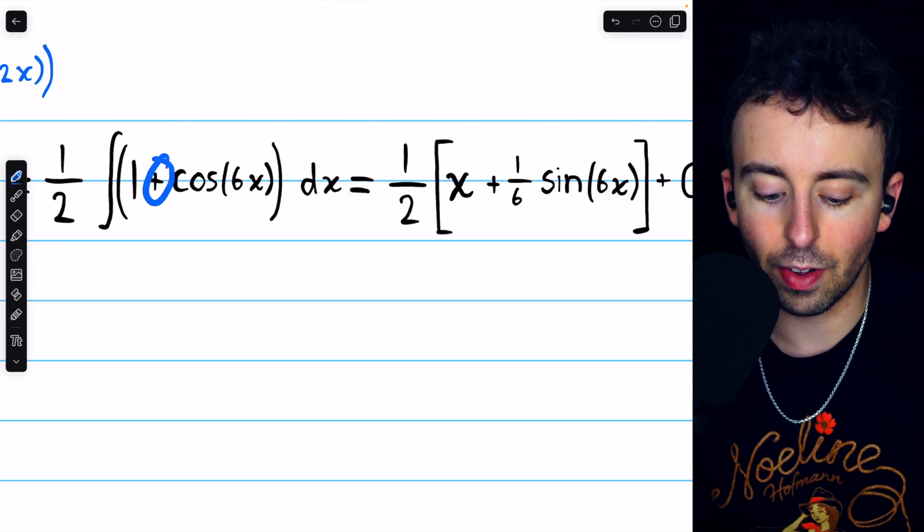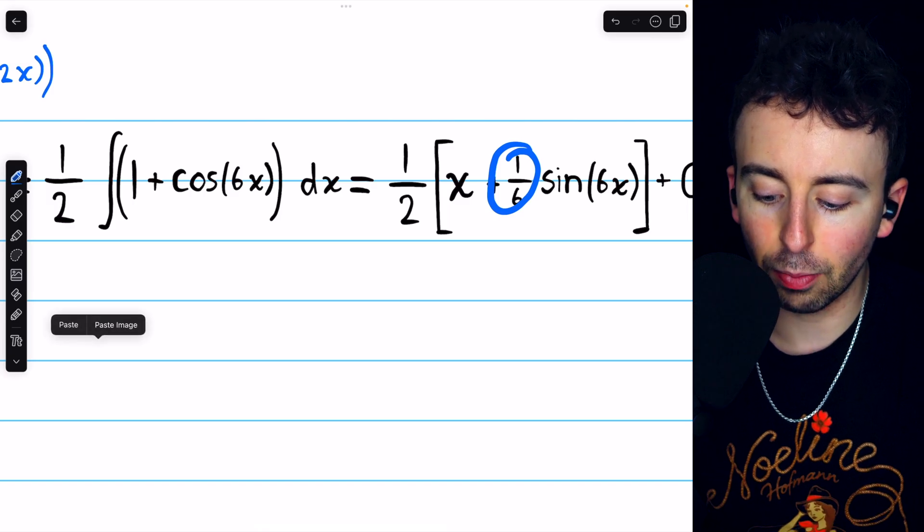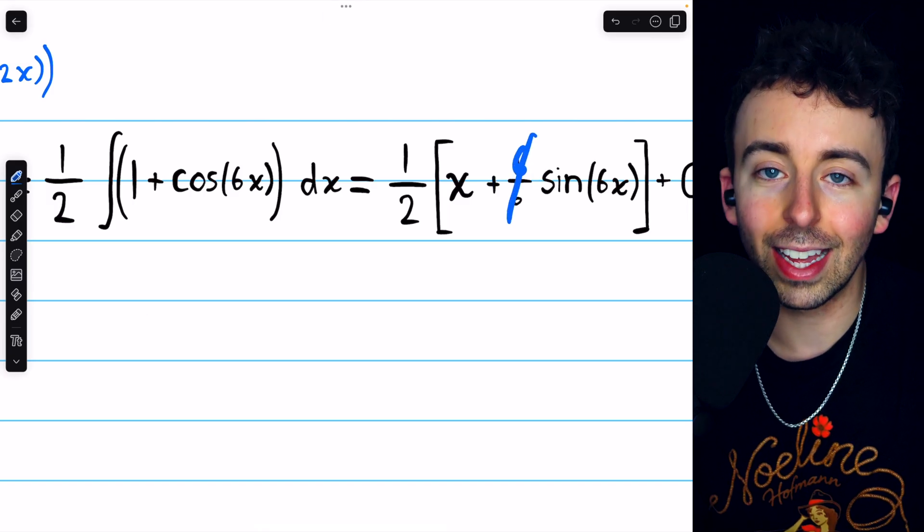In order to undo that, since we don't want a factor of 6, we have to multiply by 1 over 6. So when that 6 pops out from the chain rule, it would get cancelled out.